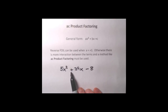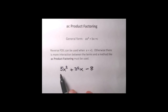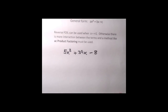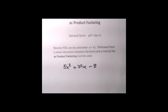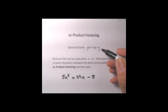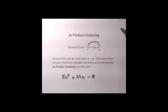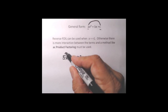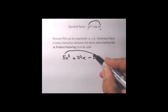Here we've got 5x squared plus 39x minus 8. There's no GCF — we always look for that first — so we're stuck with the numbers we have. The coefficient in front of the x squared term is not a nice plus one, so we have to use the AC product method. When we talk about AC product, the A is the leading coefficient and the C is the constant. Product means multiplying them, so the first thing we do is multiply A and C together.